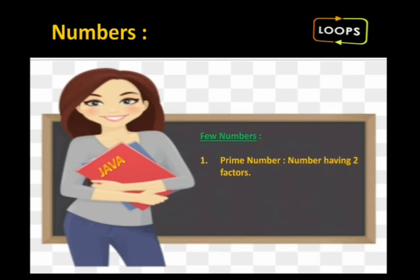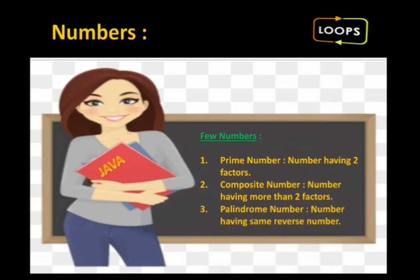You all know about prime numbers from maths. Now we have to create programs for prime numbers too. For your information, a prime number is a number having exactly two factors. A composite number is one having more than two factors. We also have palindrome numbers — a number whose reverse equals the original number. These are the few number types I'm considering in this video.